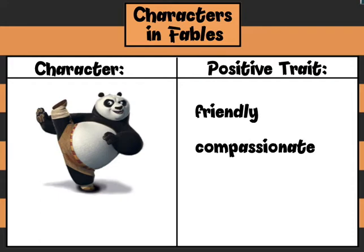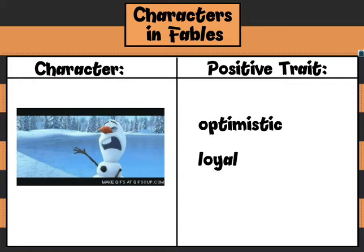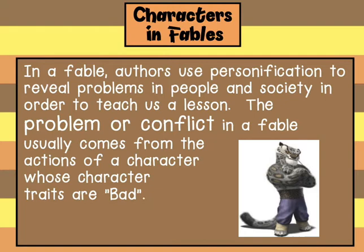If we think about the character Po from Kung Fu Panda, he was really friendly and compassionate, looked out for other people, and always tried to do his best. If we think about Olaf from Frozen, he's a pretty optimistic guy who looks at the bright side of things and who's very loyal to Anna and Elsa.